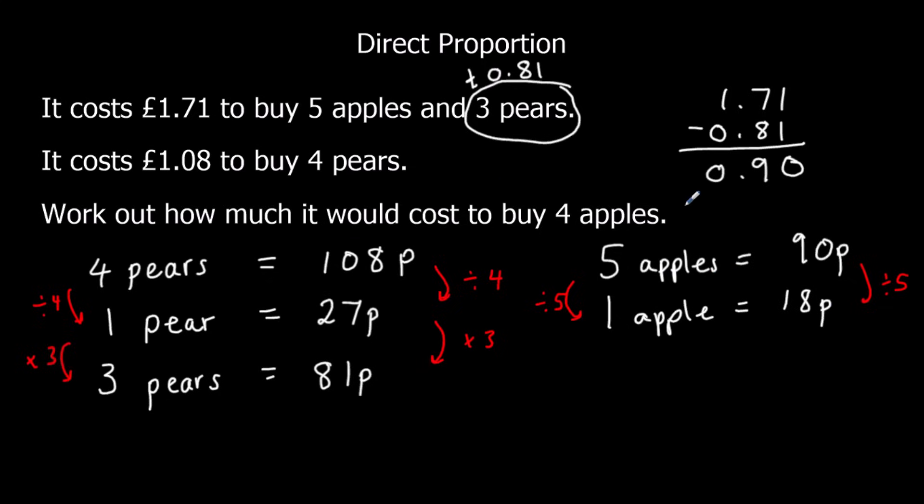I want the cost of 4 apples. So 4 apples. So 18 times 4. Or I could do 5 apples, take away 1 apple. That would work as well.